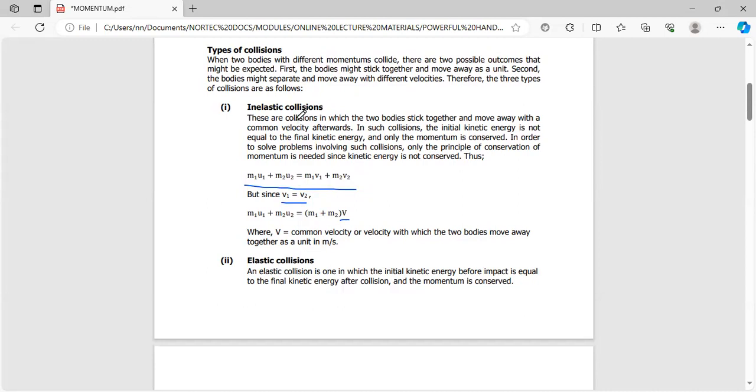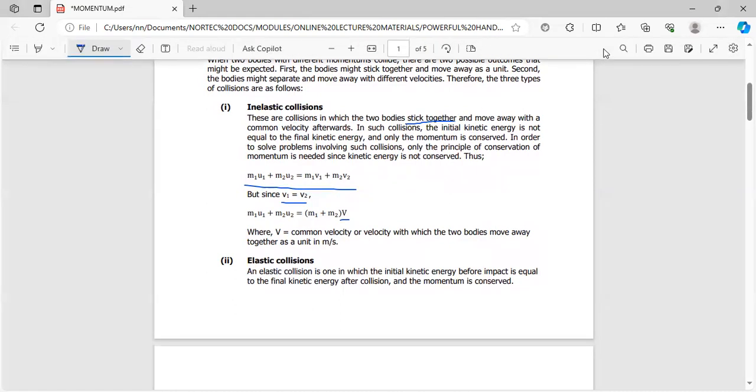If you're talking about an inelastic collision, this is where the two bodies move away with a common velocity—they stick together and move away with one velocity. V1 is the same as V2, so we can represent both by common letter V. You have M1U1 plus M2U2 equals (M1 plus M2)V, where V is the common velocity for the two bodies.